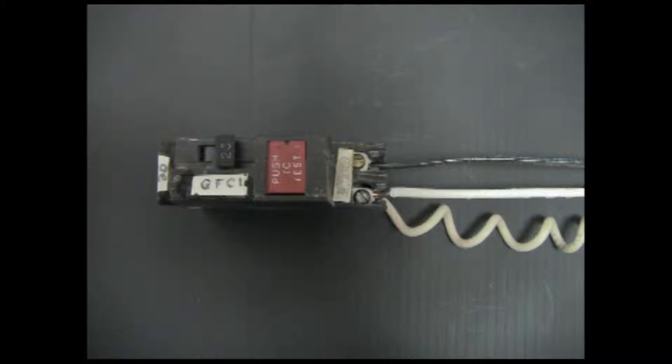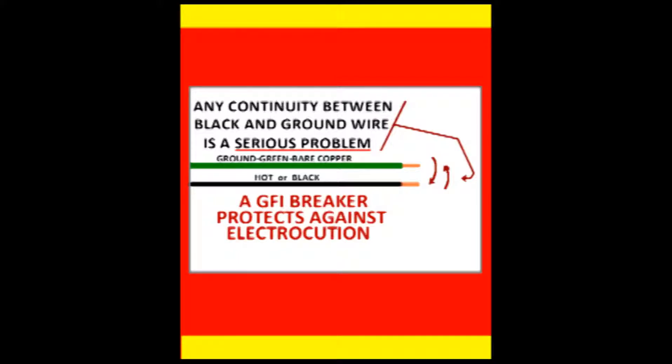A GFCI or GFI breaker detects the slightest amount of voltage from the hot or power leg to the grounding leg and immediately shuts the power off, thus preventing a potentially deadly shock.